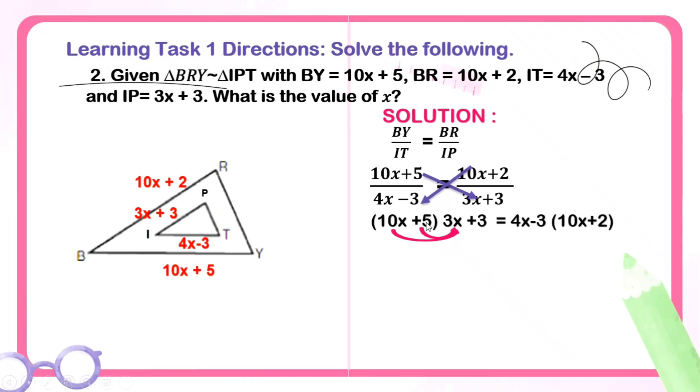The product will be a trinomial because we're multiplying a binomial or 2 terms by another 2 terms. You can use the FOIL method or distributive property. You can multiply 10x and 5 by 3x first. Then, once you've done that, multiply 10x and 5 by 3. Let's do that. 10x times 3x, we have 30x squared. 5 times 3x is 15x. Next, multiply by 3. 10x times 3 is 30x. Then, 5 times 3 is 15.